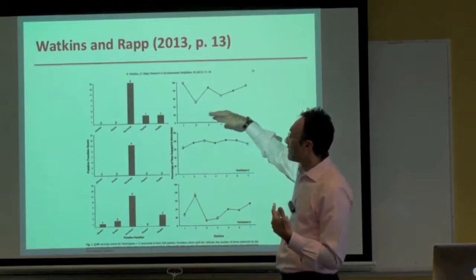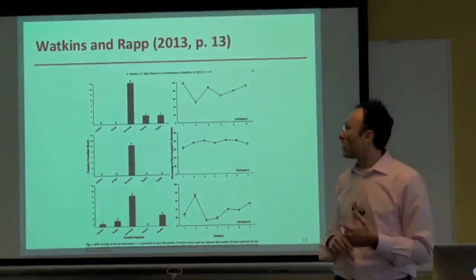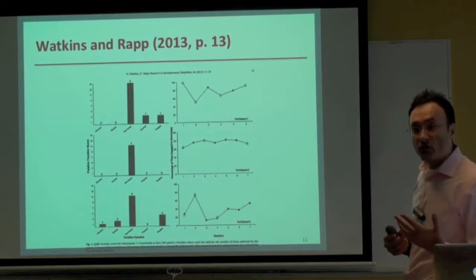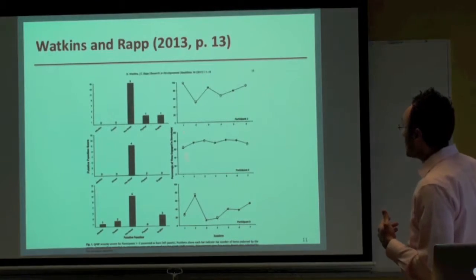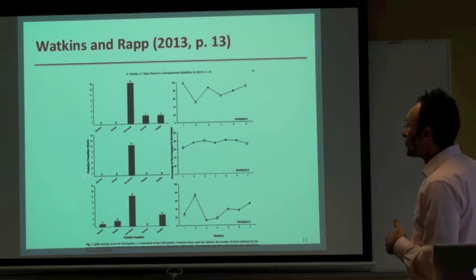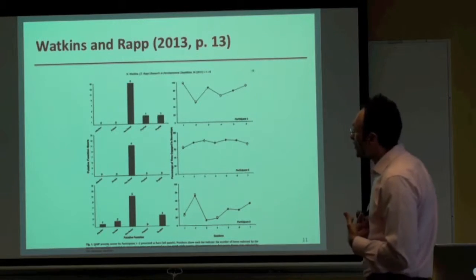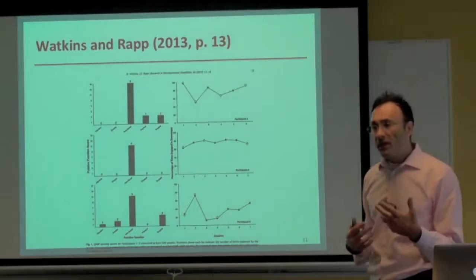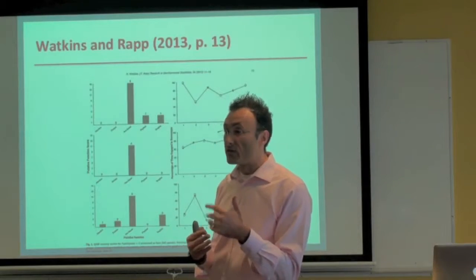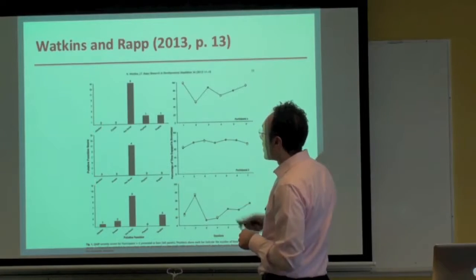The graph shows data for participants one, two, and three. The left side shows QABF scores; the right side shows functional analysis data. On the y-axis is the putative function score — with five questions each scored up to three, the maximum score per function is 15. The x-axis arrays the functions: attention, escape, non-social, physical, and tangible.